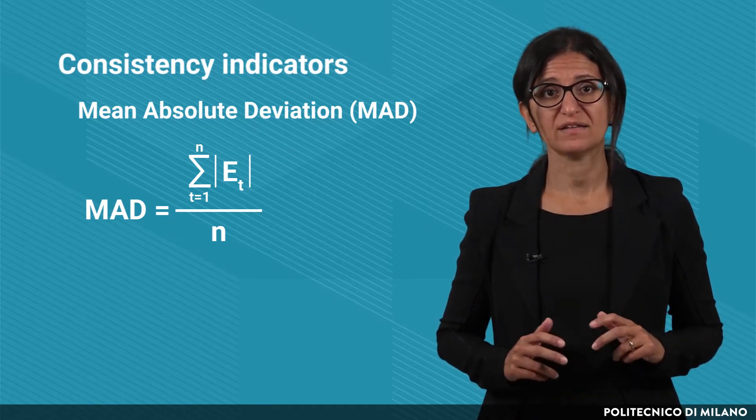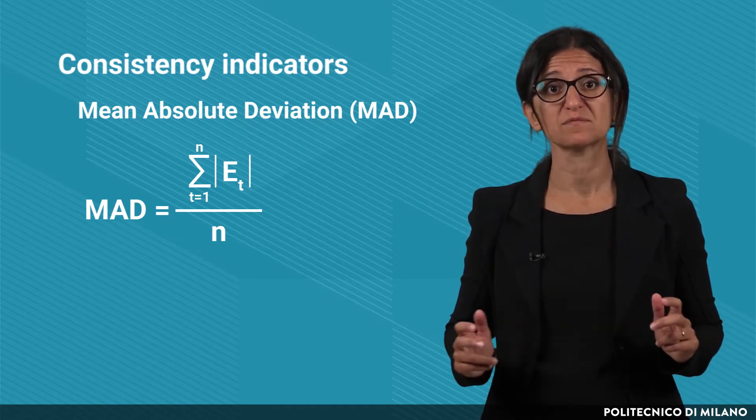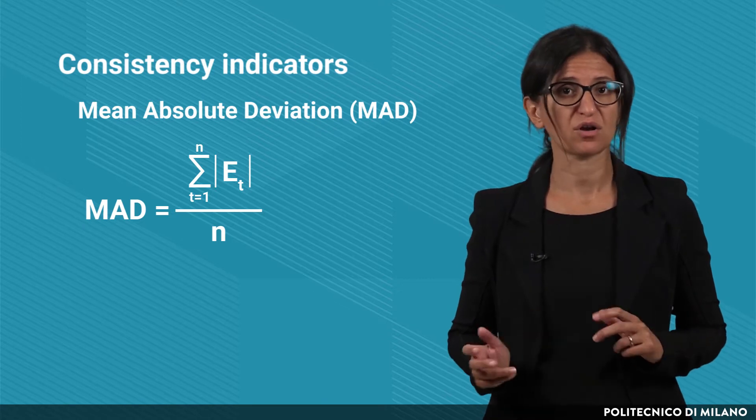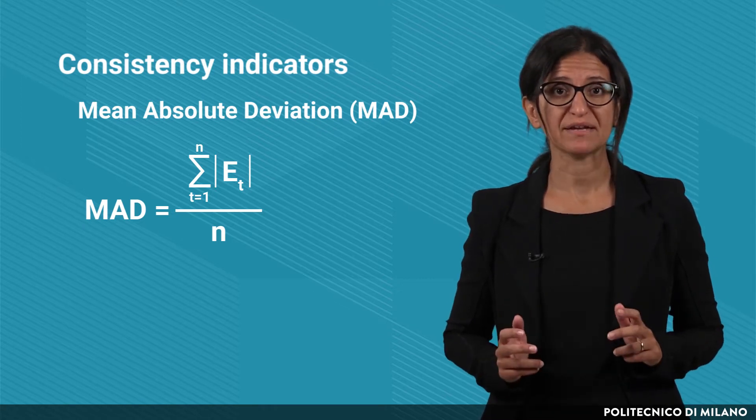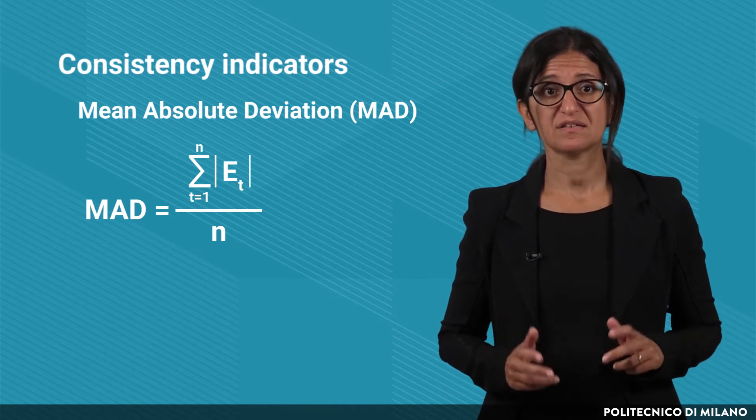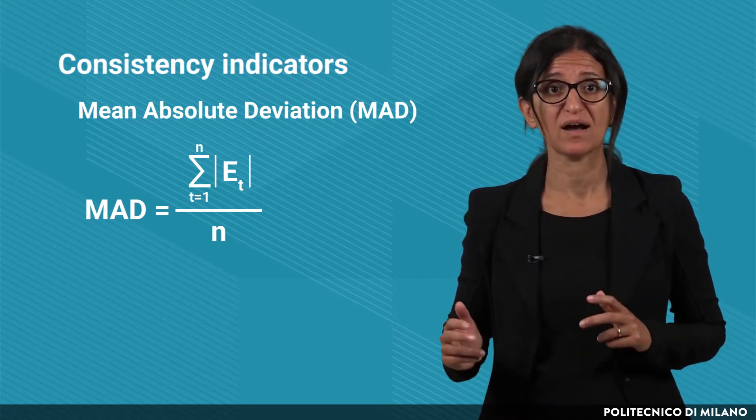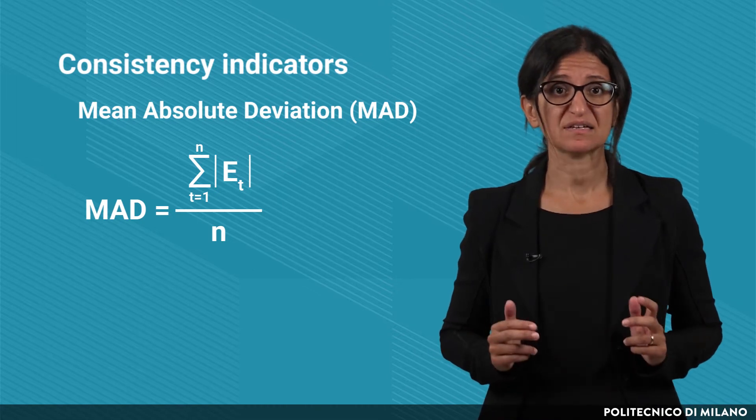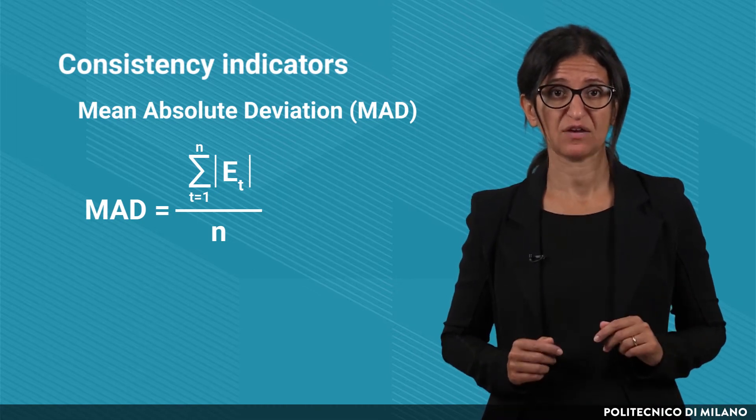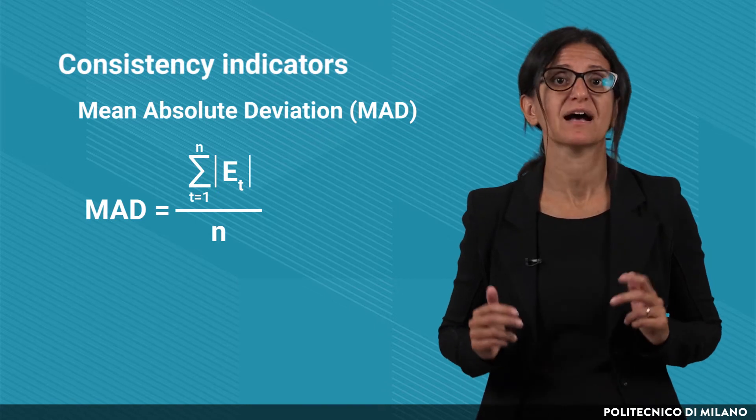For example, we find a MAD equal to 100 pieces. Is it good or not? It probably depends on the real value of the demand. This is a very low performance if the demand is equal to 200 pieces, whereas it is a much better performance if the demand is equal to 10,000 pieces.